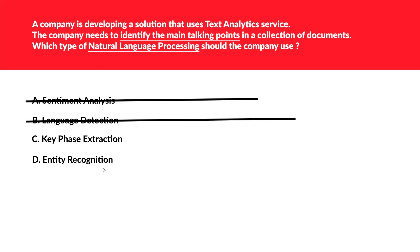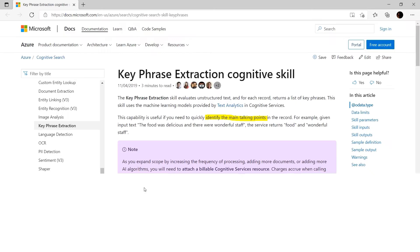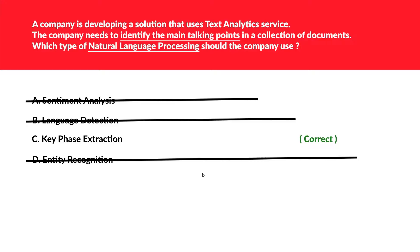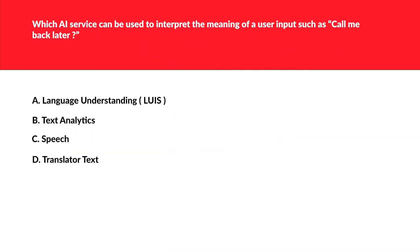Next is entity recognition — entity recognition extracts names of monuments, organizations, and similar things, so it is not related to main talking points. We lock in key phrase extraction. If you look at the official documentation, under key phrase extraction it explicitly mentions 'identify the main talking points.' This is the correct option. You will get this type of question in real-world exams as well.